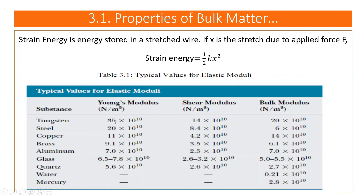For Tungsten: shear modulus = 40×10¹⁰ N/m², bulk modulus = 20×10¹⁰ N/m². For Steel, Young's modulus = 20×10¹⁰ N/m². The table also includes Copper, Brass, Germanium, and others. For Glass, the Young's modulus is given as a range from 6.5 to 7.5×10¹⁰ N/m², because different types of glass have varying modulus values.